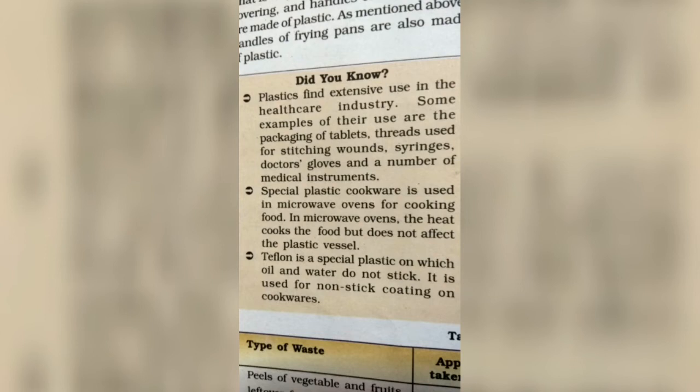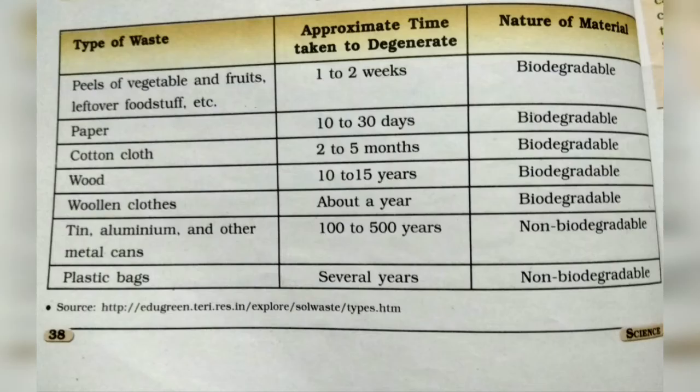In healthcare, plastic is used for making packing for tablets, threads, and gloves. Many instruments also use special types of plastic. Microwave-safe plastic is also specially designed, and a very special plastic known as Teflon is used for nonstick cookware. You can go through all the points given here.